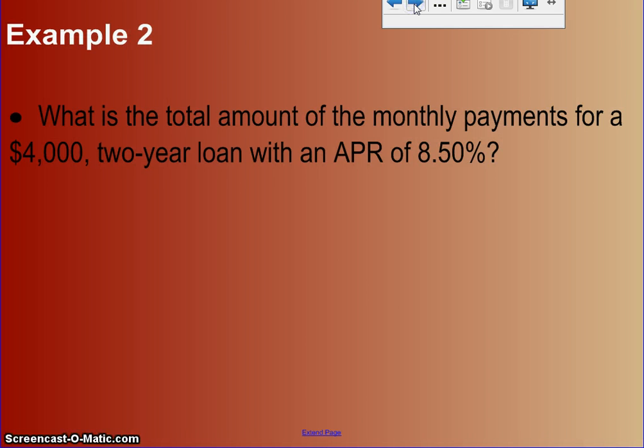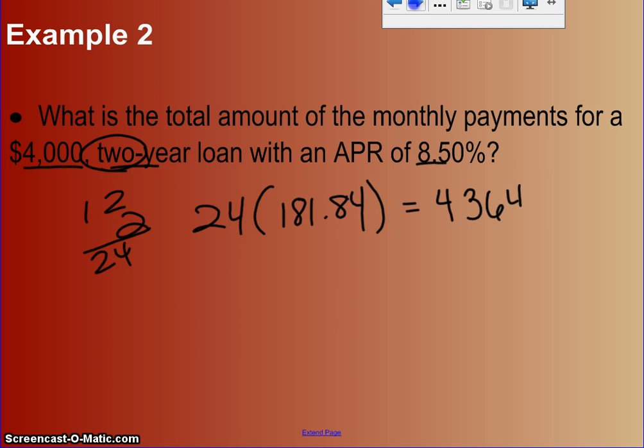Example two says, what is the total amount of the monthly payments for the $4,000 two-year loan with an APR of 8.5%? We already found the monthly payment is $181.84. The key here is it wants to know the total amount paid after all payments. It was for two years, so there was a payment each individual month. I know there are 12 months in a year, and two years at 12 months a year means I made 24 payments of $181.84. So the total paid is $4,364.16.